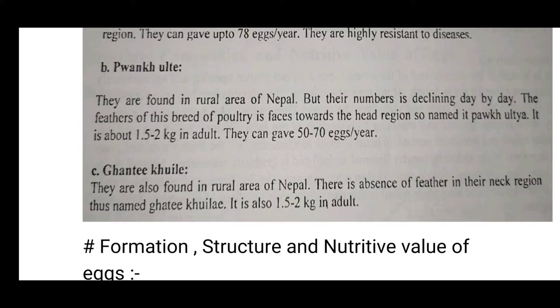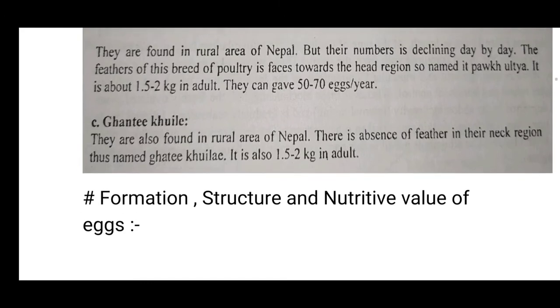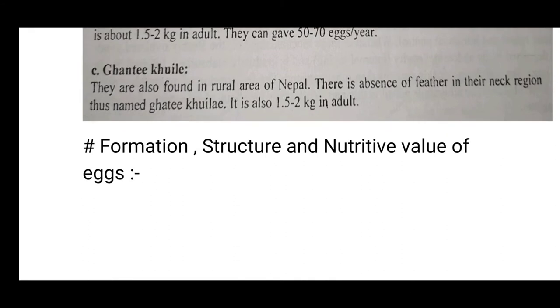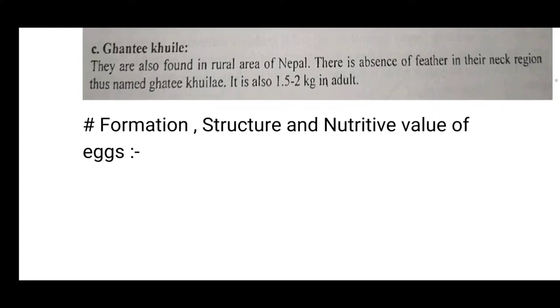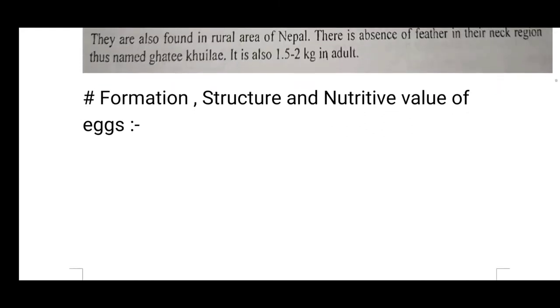The third indigenous breed is Khante Khwile. They are also found in rural areas of Nepal. This breed is characterized by the absence of feathers in the neck region, thus named Khante Khwile. The adult body weight is also about 1.5–2 kg.